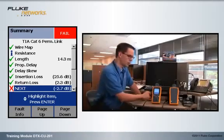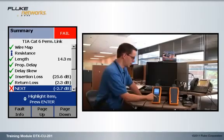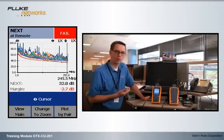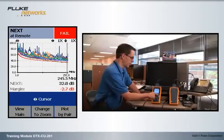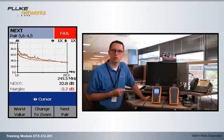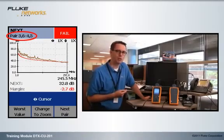So, first thing we need to do is find out which is the worst performing pair. We hit the Enter key. That'll give us all six pair combinations at the remote. And then if we hit the F3 key, that'll automatically give us the worst performing pair. In this case, 3645. And that's all the information I really know from this screen.